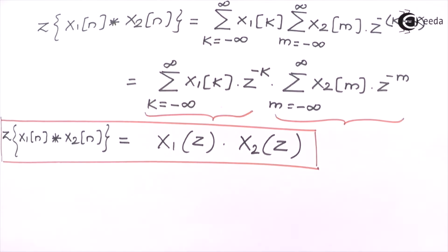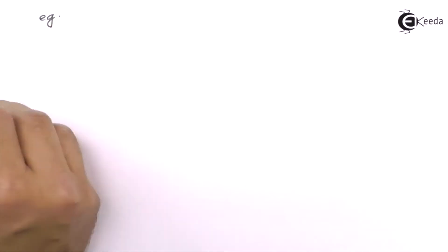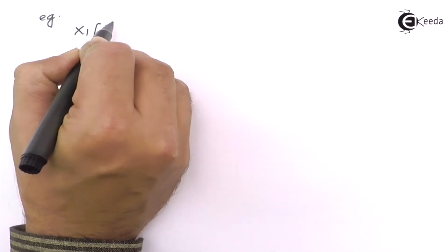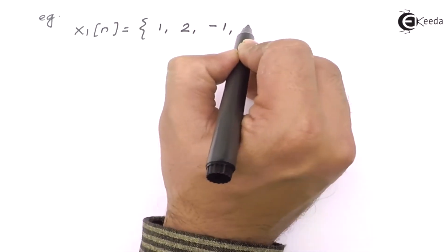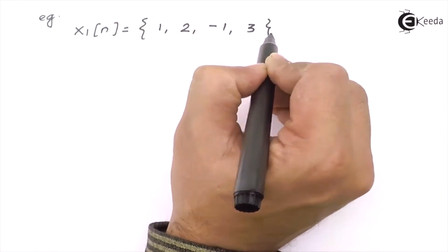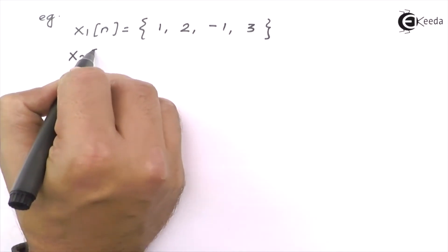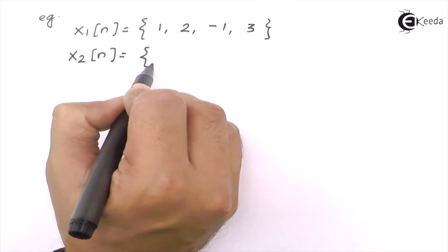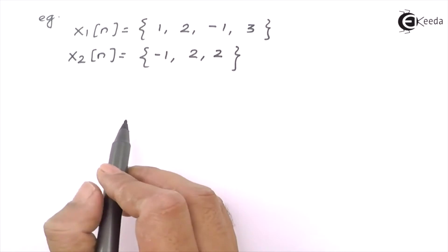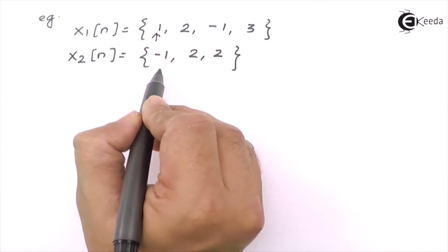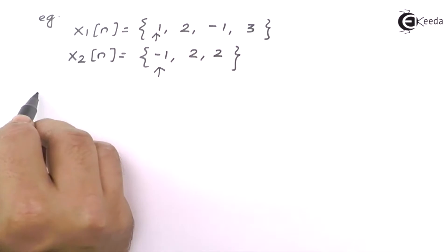This is the proof of convolution. Let's solve a simple example to illustrate the property. We define X1[N] as {1, 2, -1, 3} and X2[N] as another signal with values {-1, 2, 2}. By default, the origin is at the first element.